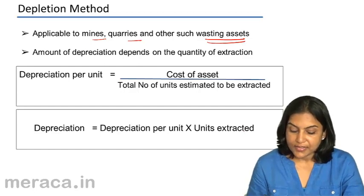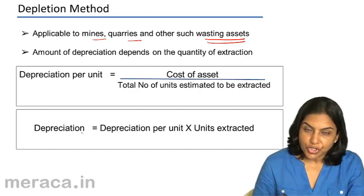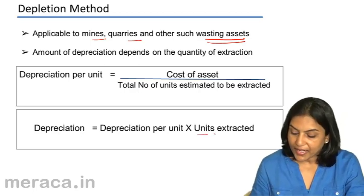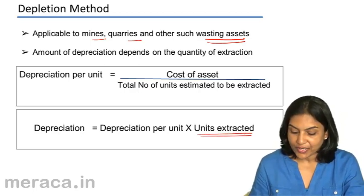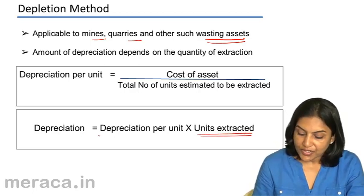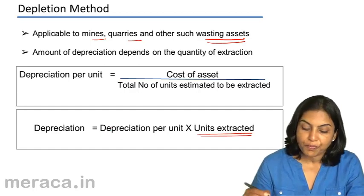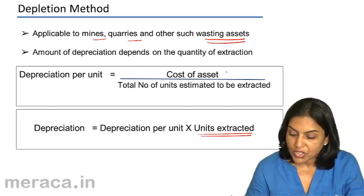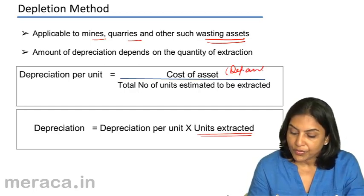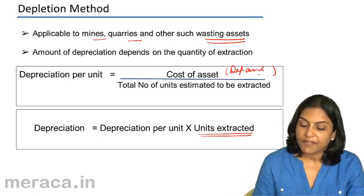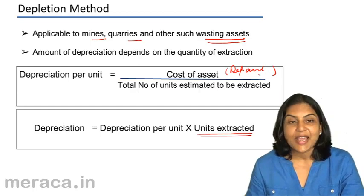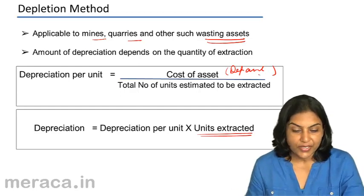This is the depreciation that we would charge every year. It depends entirely on the number of units extracted. The depreciation per unit is computed based on the total cost — it is the depreciable amount divided by the total number of units estimated to be extracted.